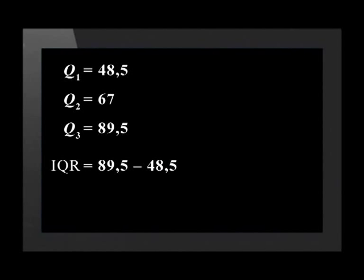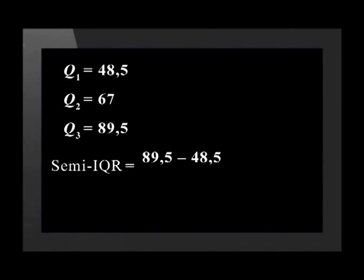Now that we have the quartiles, we can calculate the interquartile range. The interquartile range, or IQR, equals the upper quartile minus the lower quartile: 89.5 − 48.5 = 41. The semi-interquartile range equals the upper quartile minus the lower quartile divided by 2: (89.5 − 48.5) ÷ 2 = 20.5.